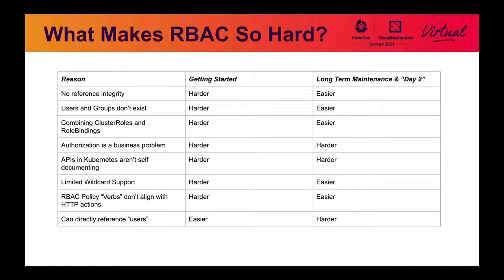The APIs in Kubernetes are not self-documenting. When you go to design your policy object, you can't look at a YAML and say that YAML tells me everything I need to know to design a policy around it. And same as what we talked about earlier with not being able to write a policy that says 'everything except,' there's very limited wildcard support. Basically, you can either enumerate all of what you want, or use a wildcard star for everything. You can't say you want a group that applies to anything with a name that starts with a certain pattern — you can't do that with RBAC, and there are really good reasons for that.